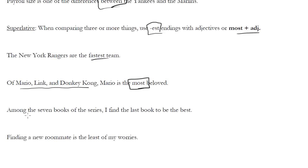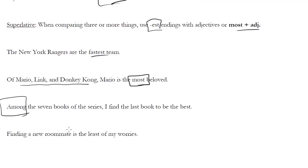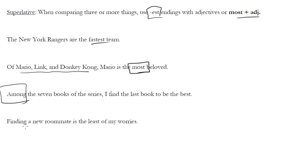Just like we use 'between' with two things, we use 'among' with three things. You don't really see this so much on the SAT, nor frankly much in the real world anyway. Among the seven books of the series, I find the last book to be the best. Finally, finding a new roommate is the least of my worries. Where we used 'less' before with two things, we use 'least' here with three or more things. Assuming there are three or more worries, we'd use 'least.' And that is it for your comparative and superlative.